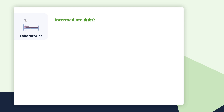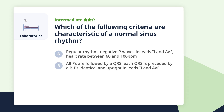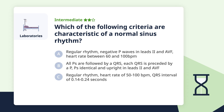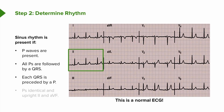Here comes your next challenge to earn two stars. Which of the following criteria are characteristic of a normal sinus rhythm? In the green box, you'll notice each QRS is preceded by a P wave — the atrium depolarizes before the ventricle. All P waves are followed by a QRS, with no blockage of the beat going down through the heart. Each QRS is preceded by a P, and the P waves are all identical — upright in leads 2 and AVF, and nice and narrow, not prolonged.